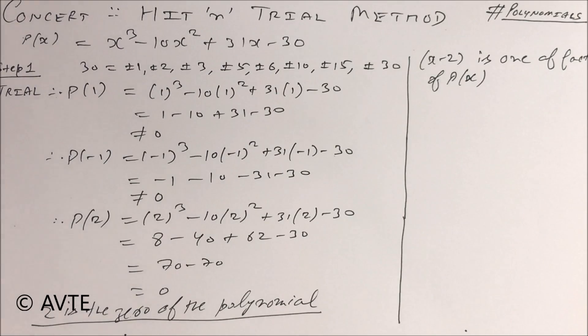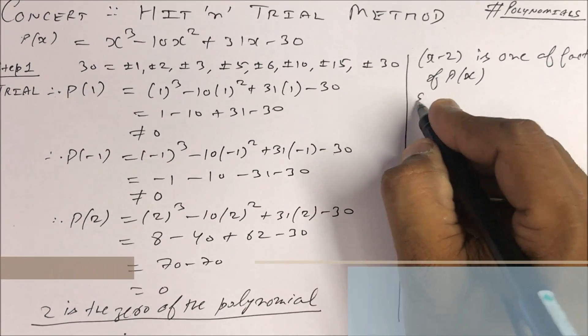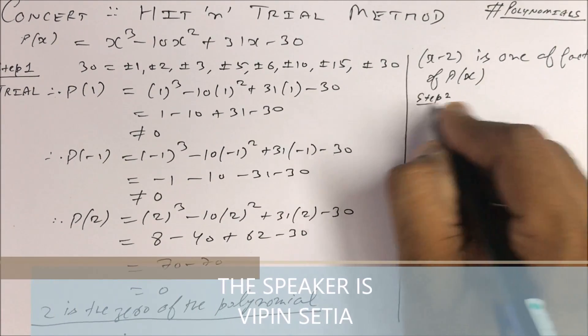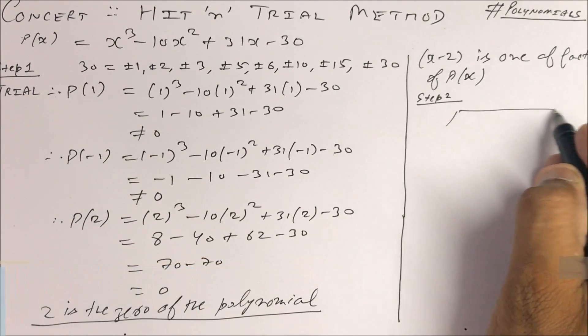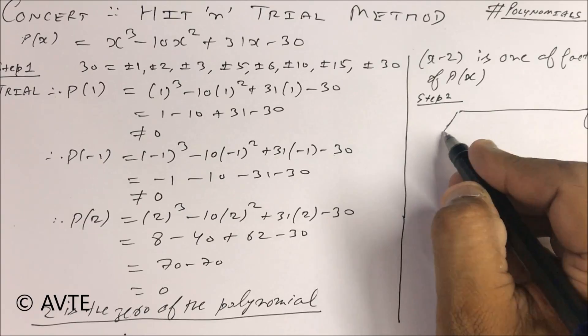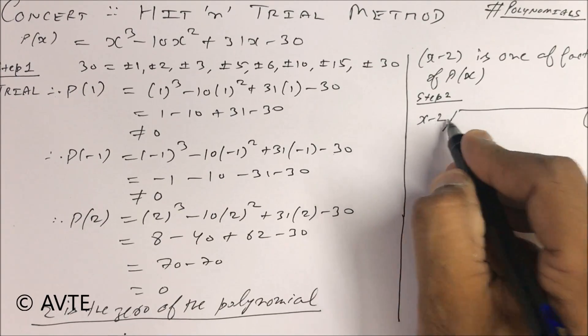So guys, now your step 2. In step 2, you have to divide P(x) with x - 2.